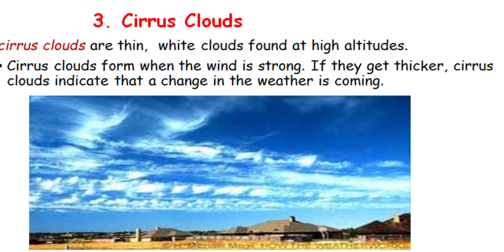The third kind of cloud is called cirrus. Cirrus clouds are thin, white clouds found at the highest altitudes. They form when the wind is strong. If they get thicker, cirrus clouds indicate that a change in the weather is coming.